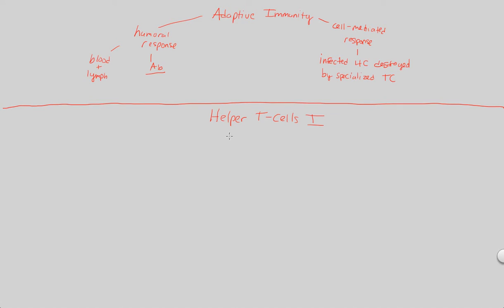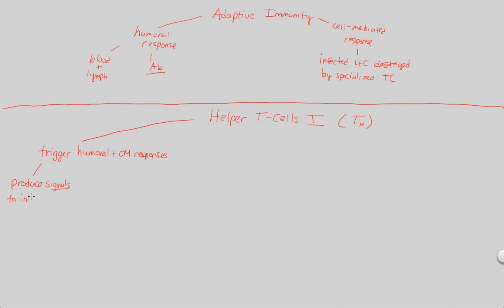Helper T cells, abbreviated T sub H, will trigger both humoral and cell-mediated responses. They are very powerful in this regard. What do they do? Helper T cells are really good at producing signals to initiate antibody production — that is, to activate B cells. This means helper T cells are involved in the humoral side of adaptive immunity, since anything involving antibodies is about the humoral adaptive immune response.